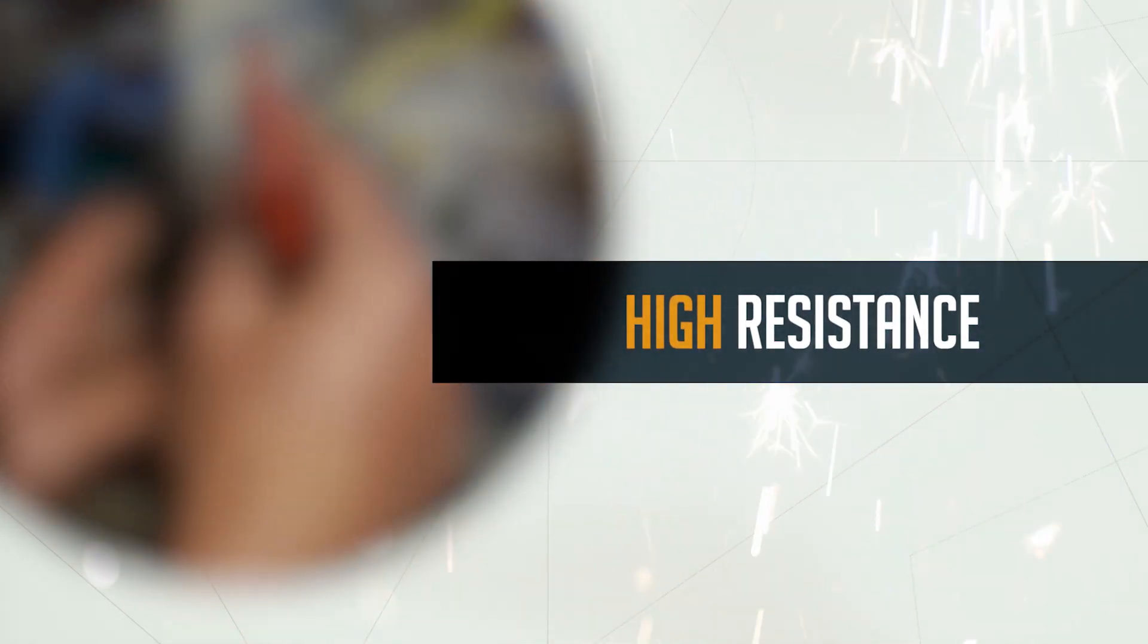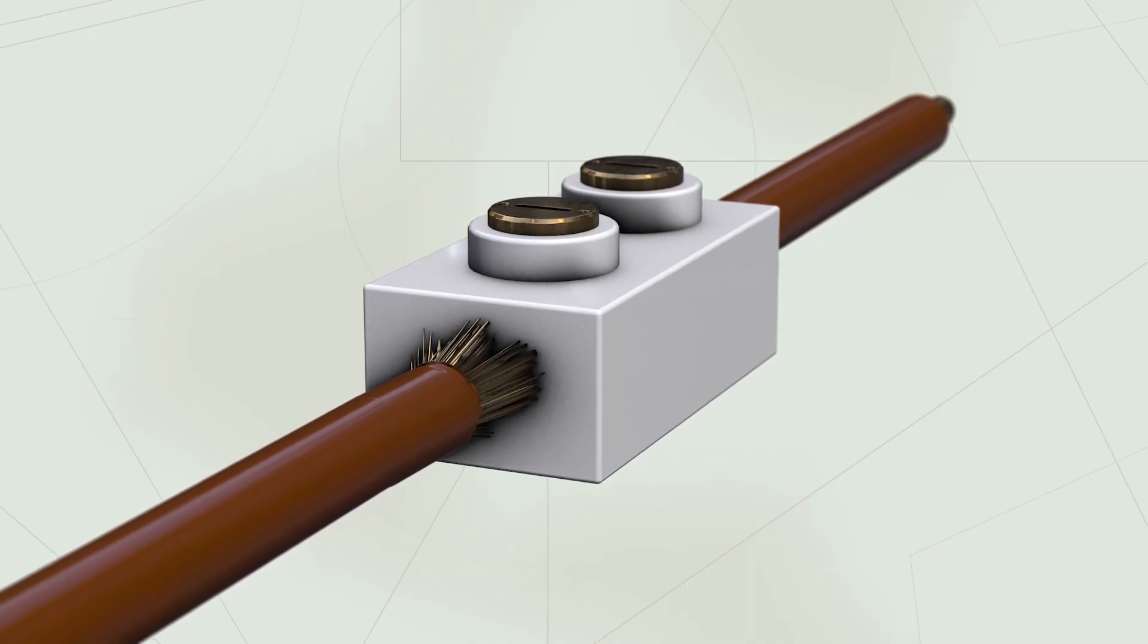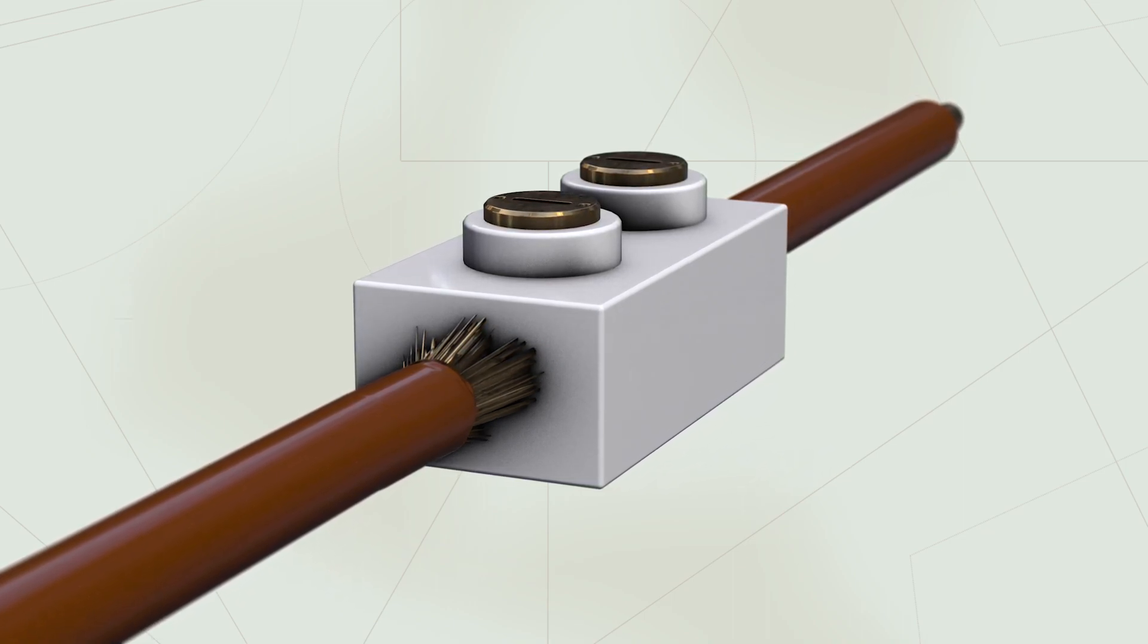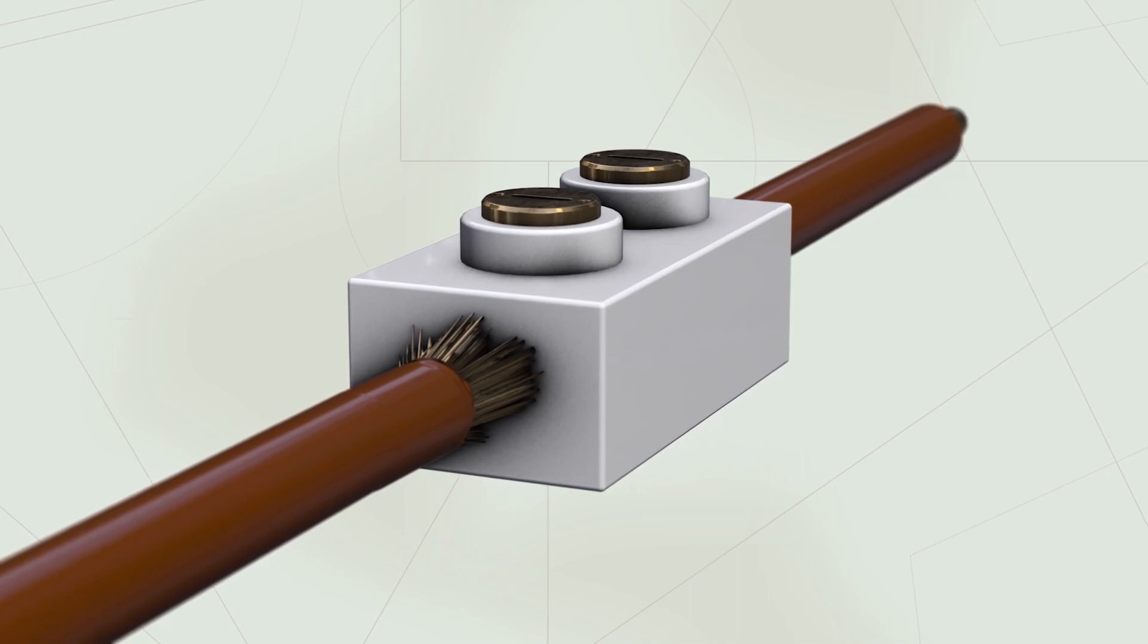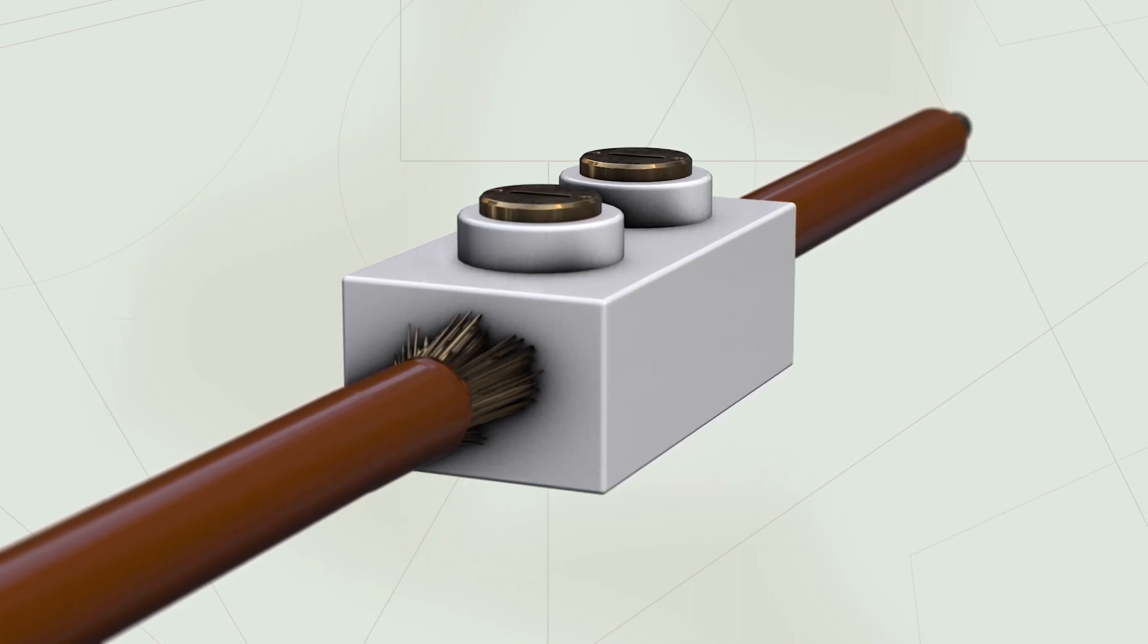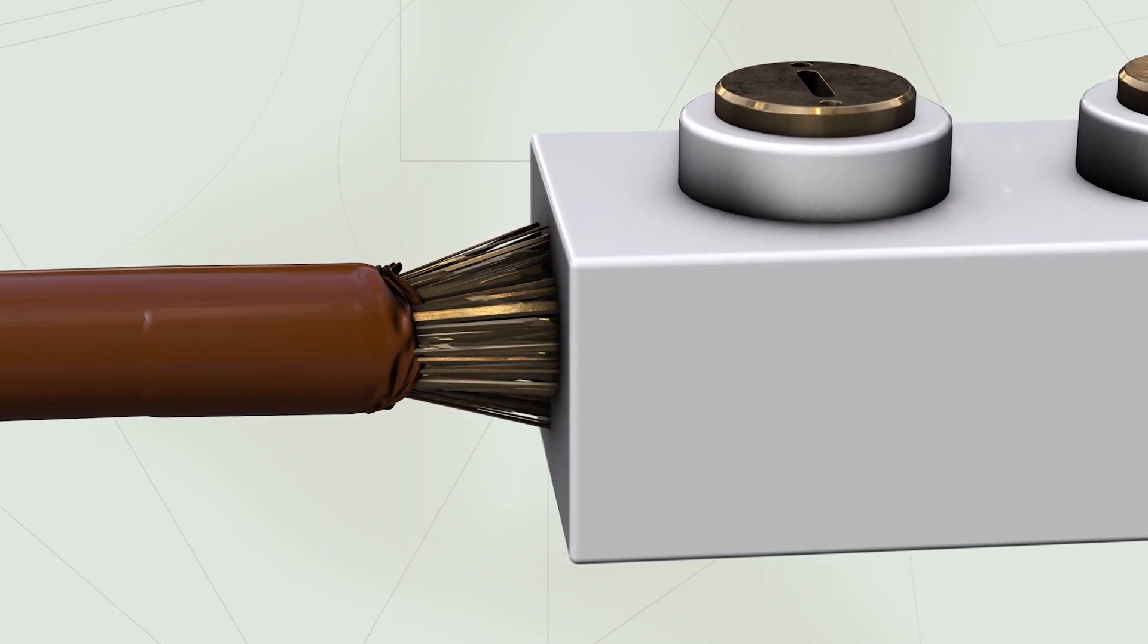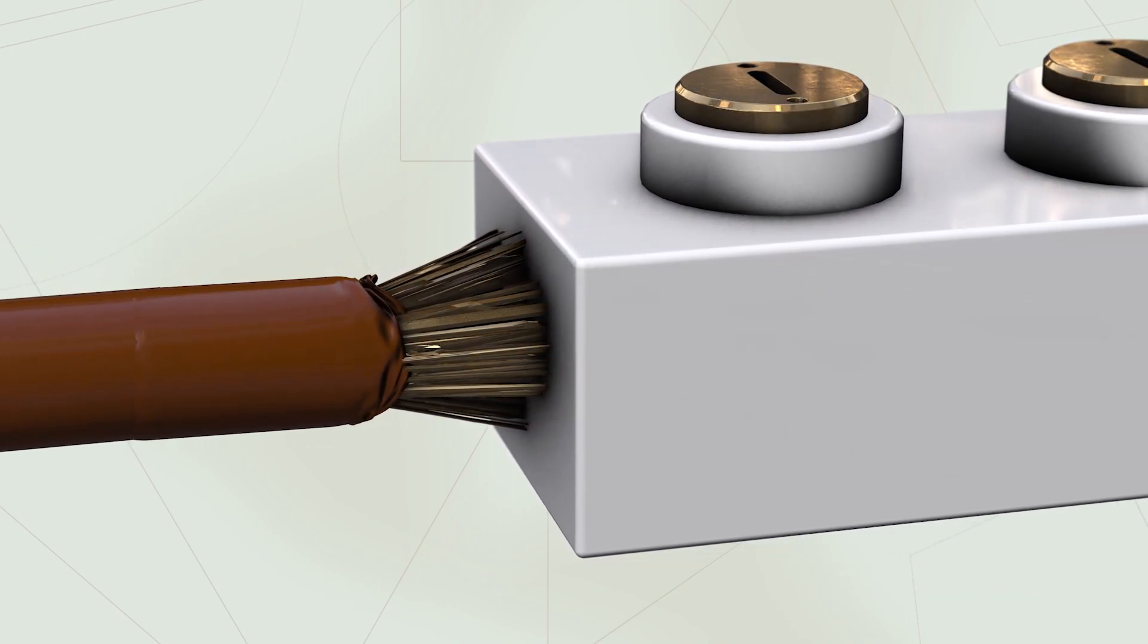High resistance. This can be the result of a deteriorated termination, poor connection or simply a faulty product or poor installation. This type of fault can potentially go unnoticed for many years if an installation is not periodically inspected. High resistance can be identified with a low ohms continuity tester.